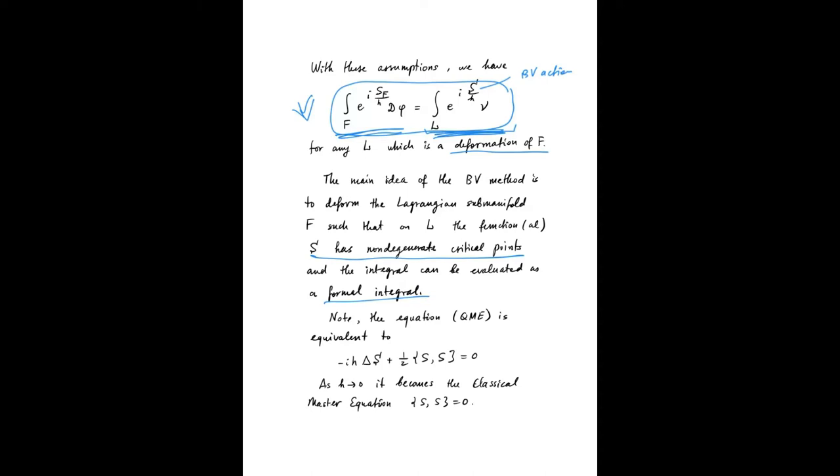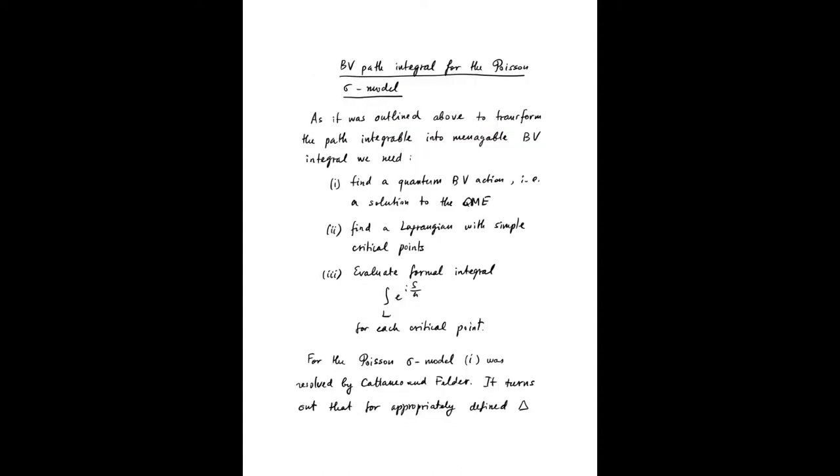The quantum master equation, you can just take the delta of the exponent, and you will see that it's equivalent to this equation. And you can also see that as ℏ goes to zero, it becomes the classical master equation. So you can naturally expect that the quantum action that you need here—let me put a small letter ℏ here—you can look for solutions to this equation in this form. And there are some beautiful results in this.